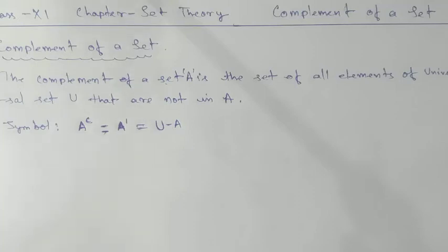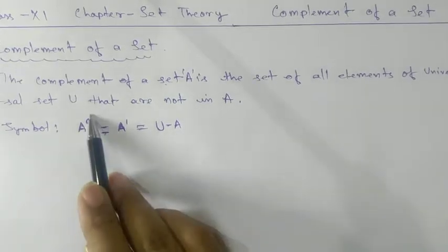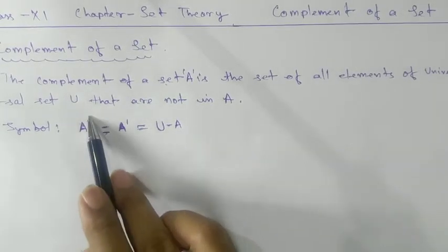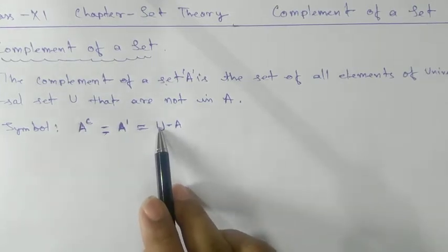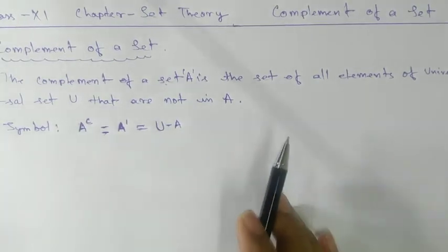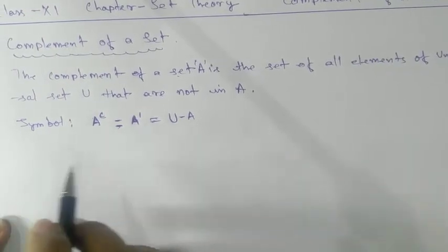Today we are going to learn complement of a set and its properties. Let's try to understand what it means. The complement of a set A is the set of all elements of universal set U that are not in A. The notation is A complement or A prime. This means universal set minus A. Let's go with an example to understand this definition.